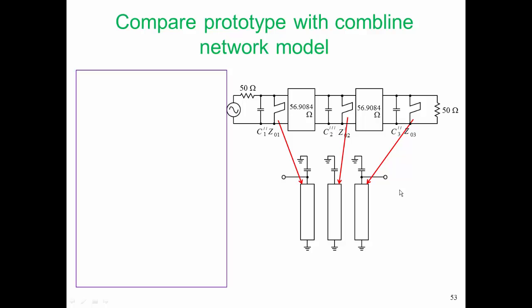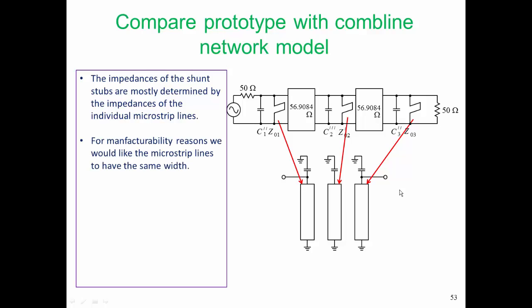Again, we're going to realize those stubs by those individual microstrip lines. So the impedances of the shunt stubs are mostly determined by the impedances of the individual microstrip lines. And those characteristic impedances are determined by the width of the line, and for manufacturability reasons,